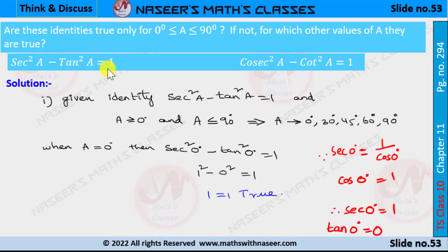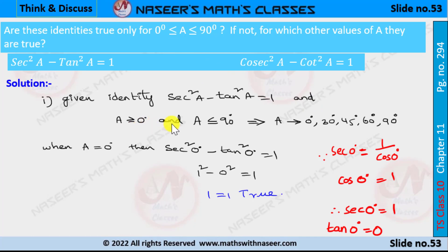The first identity is sec²a − tan²a = 1, and the second is cosec²a − cot²a = 1. According to the given condition, a is greater than or equal to 0 and less than or equal to 90 degrees, so the values of a are 0°, 30°, 45°, 60°, and 90°.